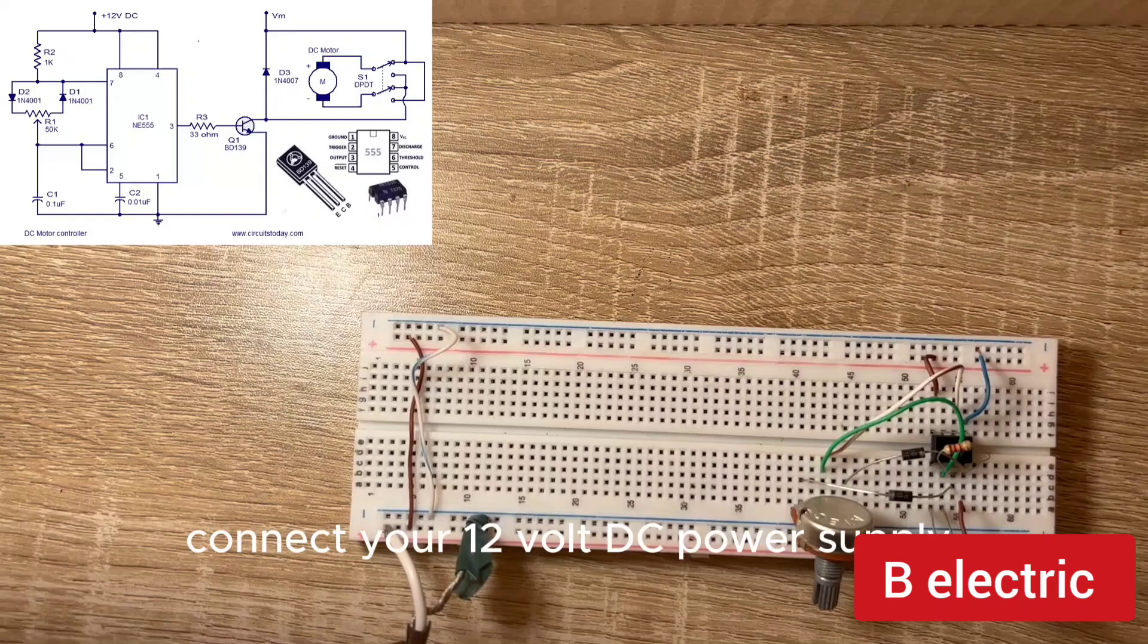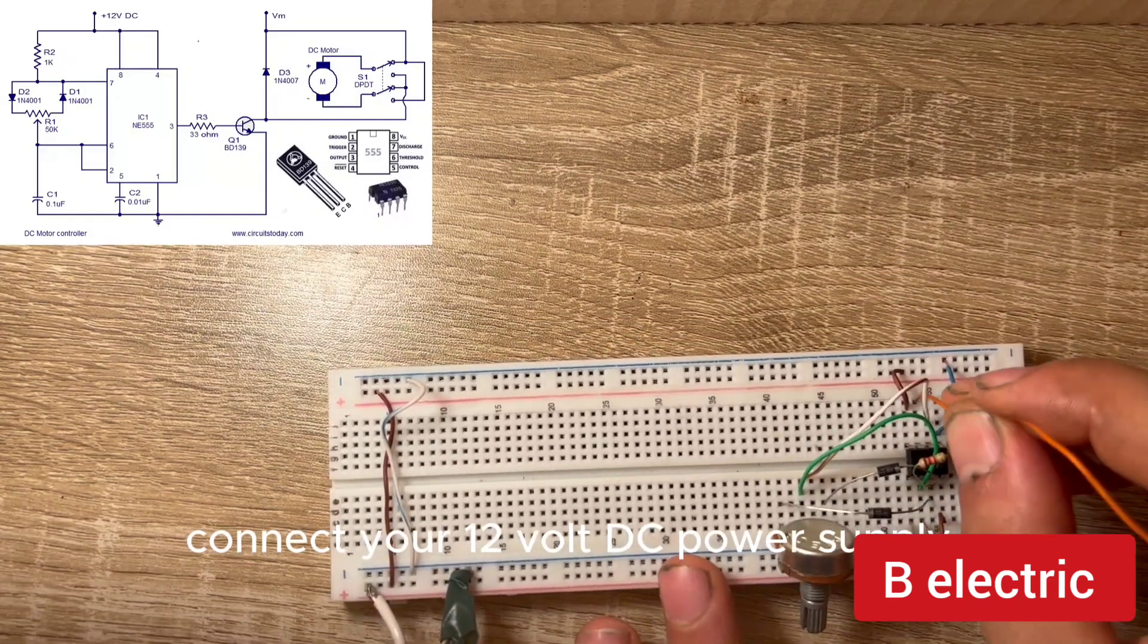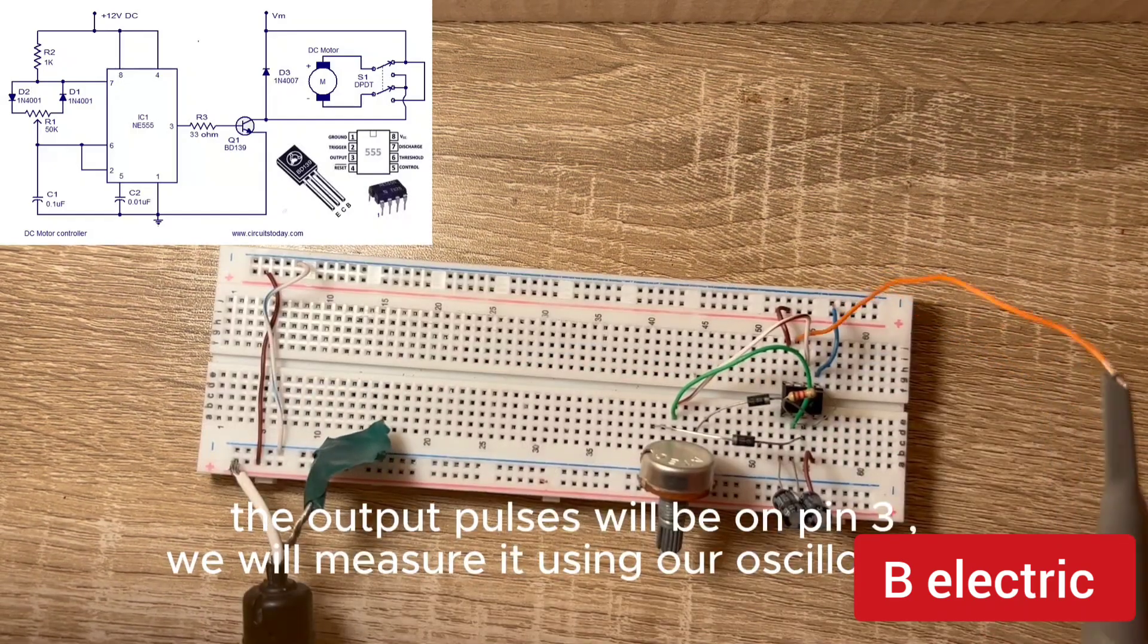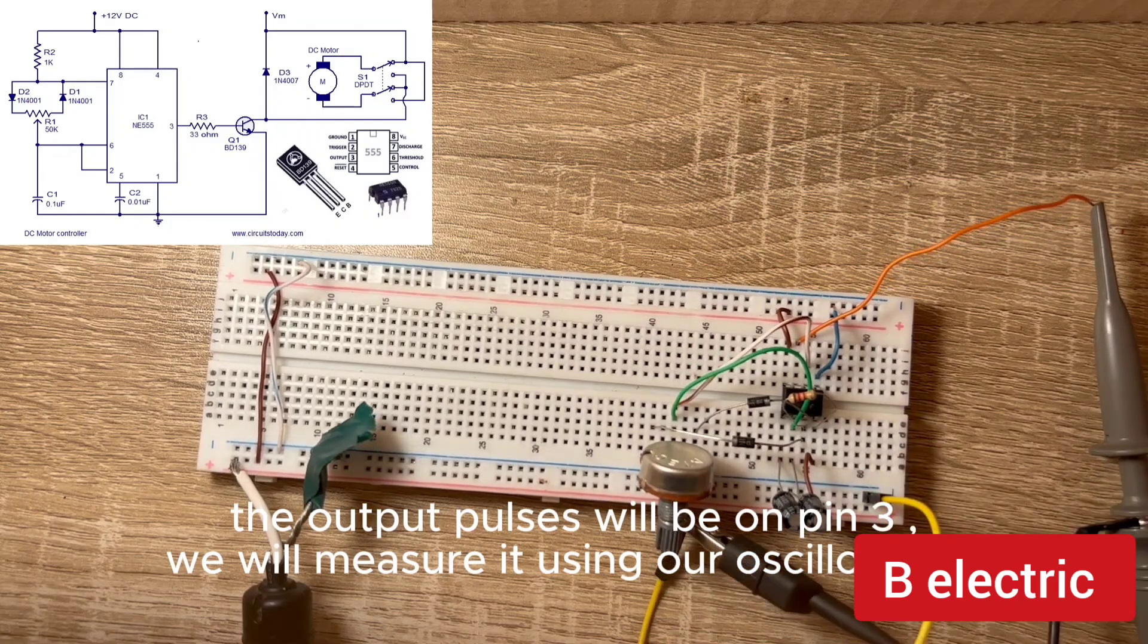Connect your 12 volt DC power supply. The output pulses will be on pin 3. We will measure it using our oscilloscope.